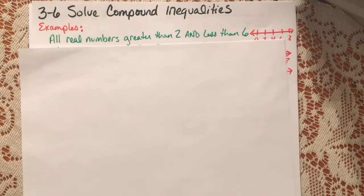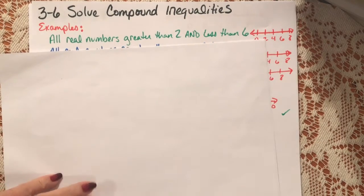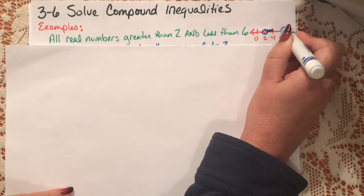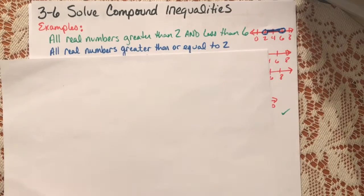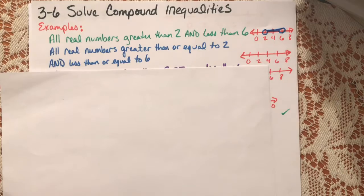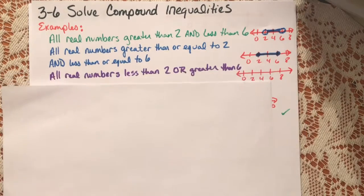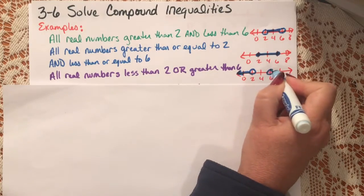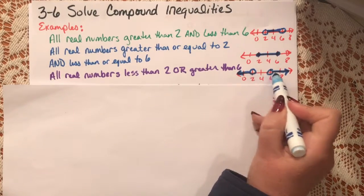So what do compound inequalities look like? For example, when they ask for all real numbers that are greater than 2 and less than 6, graphing greater than 2 and less than 6 gives a certain graph. All real numbers greater than or equal to 2 and less than or equal to 6 looks like this. All real numbers less than 2 or greater than 6 — so it can be between them, or it can be excluding everything between them.